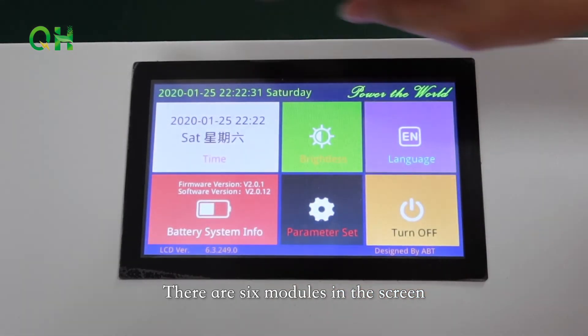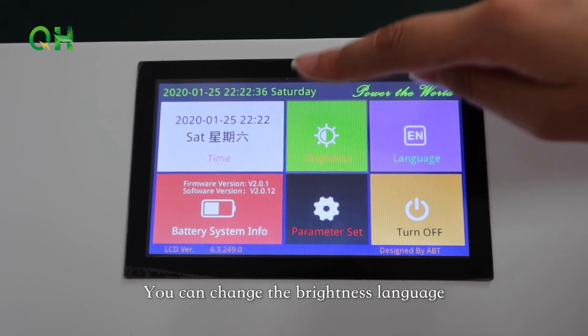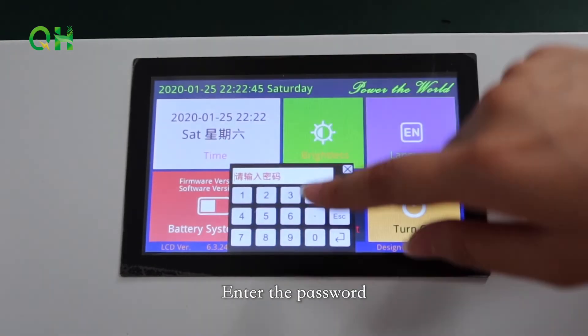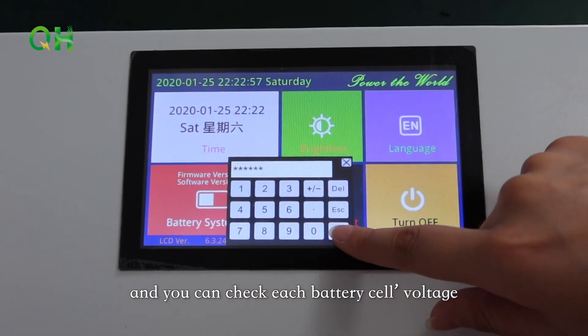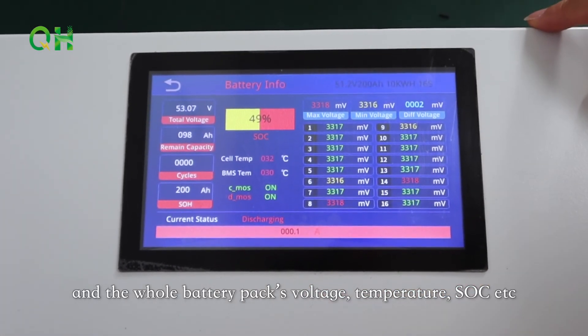There are six modulars in the screen. First modular shows the time of the day. You can change the brightness, language. Enter the password and you can check each battery cell's voltage and the whole battery pack's voltage, temperature, SoC, etc.